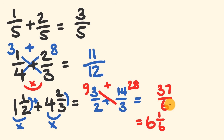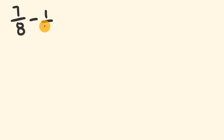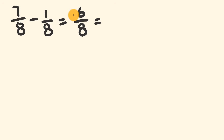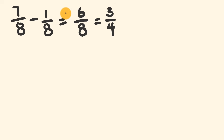Subtracting fractions is a very similar process to addition. Starting with an easy question: 7 over 8 minus 1 over 8. Same denominator, so 7 minus 1 is 6, and the denominator stays 8 — giving 6 eighths. We can simplify this further by finding a number that goes into both top and bottom: 2 goes into both, so 6 divided by 2 is 3, and 8 divided by 2 is 4. That gives us the simplified equivalent fraction of 3 quarters.